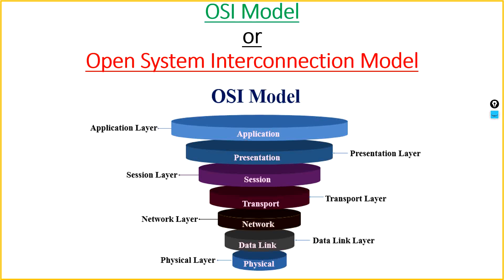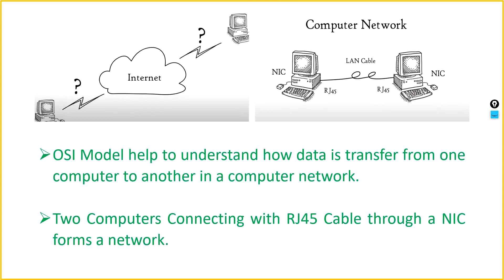The OSI model is a 7-layer model: the physical layer, data link layer, network layer, transport layer, session layer, presentation layer, and the application layer. The OSI model helps us understand how data is transferred from one computer to another in a computer network.